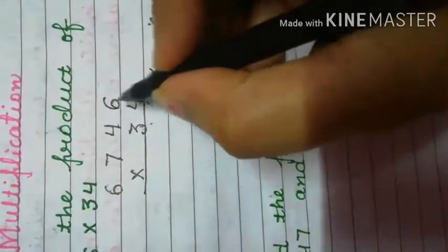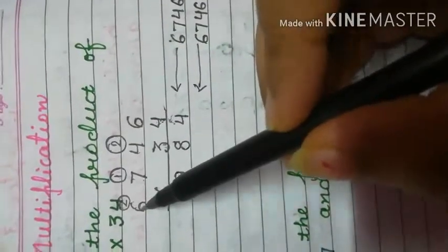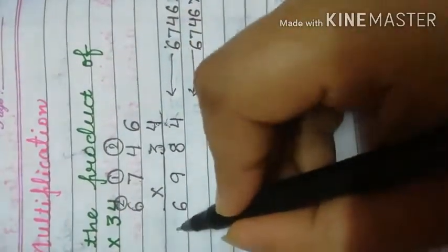We will multiply 4 with 6: 4 sixes are 24, so we write 4 and carry 2 forward. In the next step we multiply 4 with 4: 4 fours are 16, 16 plus 2 is 18. Then 4 sevens are 28, 28 plus 1 is 29. And then 4 sixes are 24, 24 plus 2 is 26.